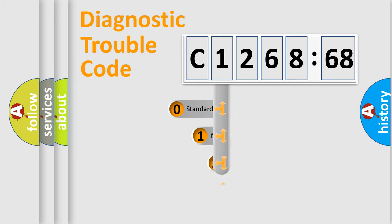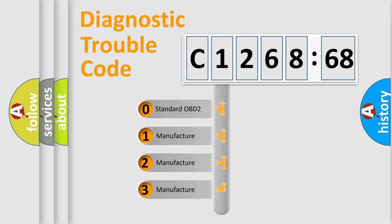Powertrain, Body, Chassis, Network. This distribution is defined in the first character code.